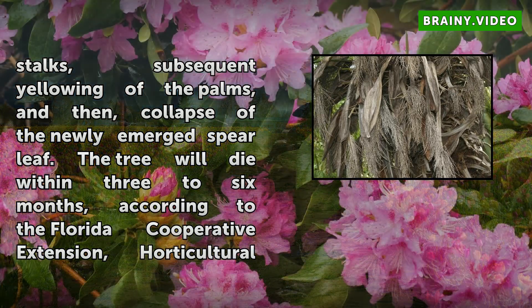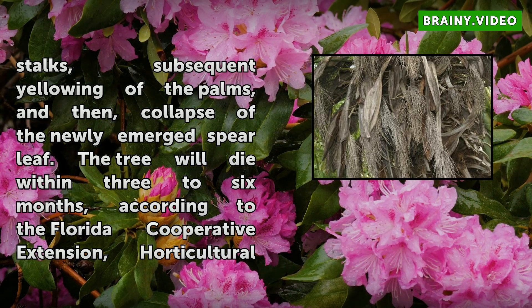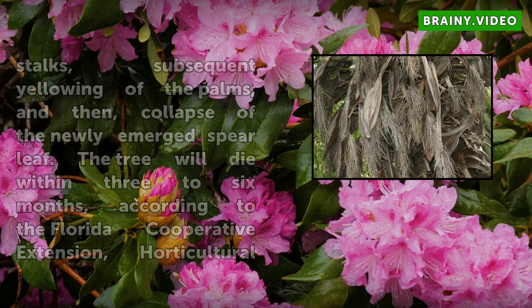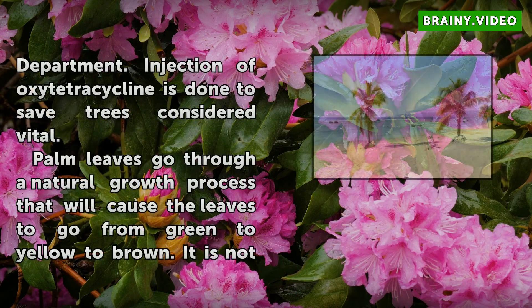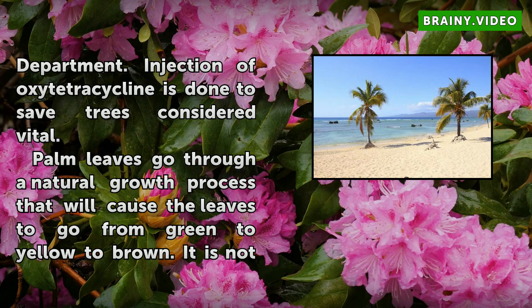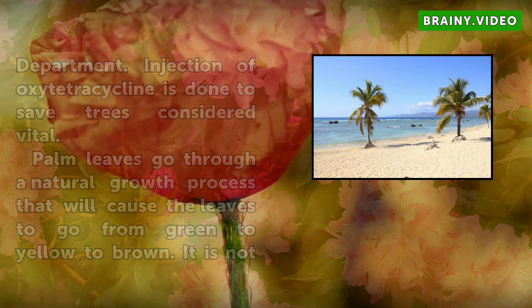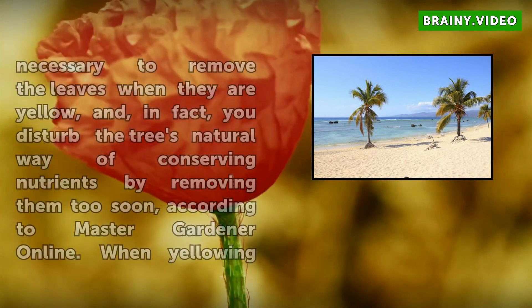Palm leaves go through a natural growth process that will cause the leaves to go from green to yellow to brown. It is not necessary to remove the leaves when they are yellow — in fact, you disturb the tree's natural way of conserving nutrients by removing them too soon, according to Master Gardener online. When yellowing occurs on new leaves, however, it indicates a nutritional problem.